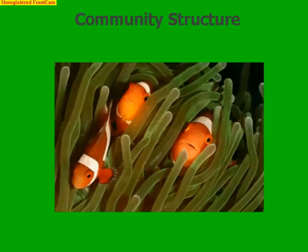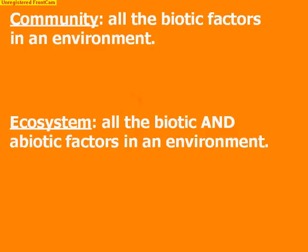Today we're going to talk about community structure, or how living things interact in their community. We've already briefly discussed the difference between a community and an ecosystem. A community is all of the biotic factors in an environment, whereas an ecosystem includes both the biotic and the abiotic. So communities are just living things; ecosystems include living and non-living.